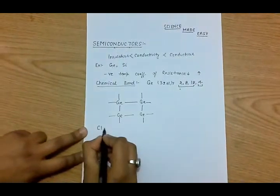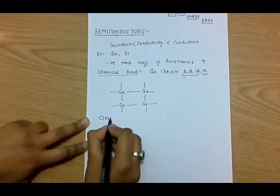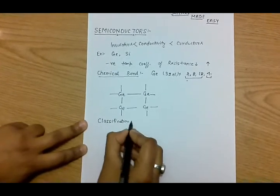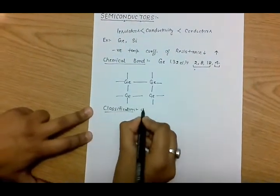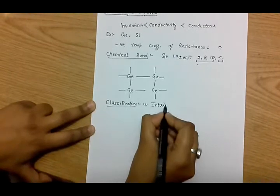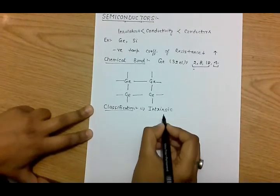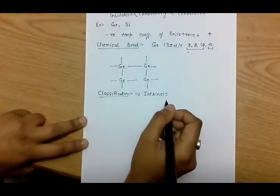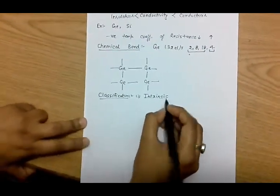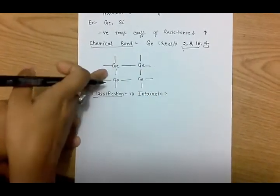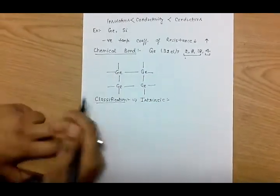Now the classification of semiconductor materials. Semiconductor materials are classified into two types. Number one is the intrinsic semiconductor material — these are pure semiconductor materials in the form as explained above.